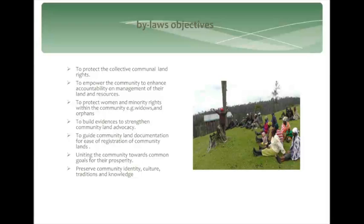The bylaws the community are drafting are aiming to achieve a number of things. One of them is seeking to protect their collective rights as a community. Remember they are indigenous people; they have common rights and that's what they want to protect. Another aim is to empower the community and to strengthen the leadership and bring about accountability in the management of land and resources. The women and minority issues have to be looked into by the bylaws, whereby widows and orphans shall be protected. With the court cases, the bylaw process is a form of gathering additional information to strengthen their advocacy on land rights.